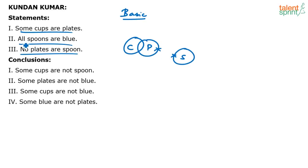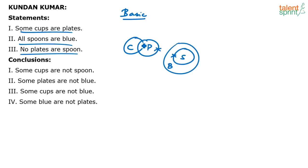Now look at the second statement: all spoons are blue. Spoons is already drawn, so we draw blue around spoons — all spoons are inside blue. This is the basic diagram. You can verify all the statements: some cups are plates, all spoons are blue with spoons inside the blue circle, and no plates are spoon meaning plates and spoons will not touch each other.